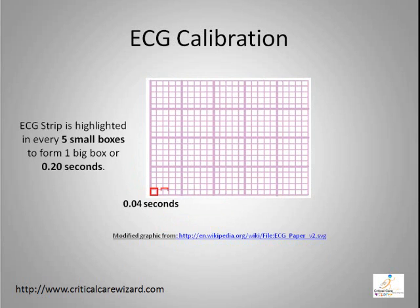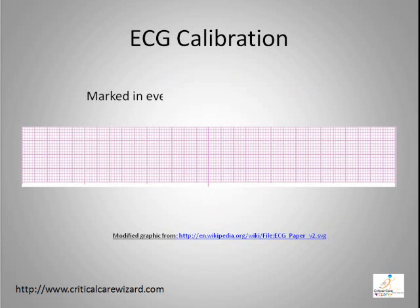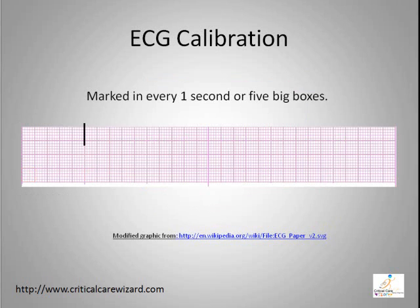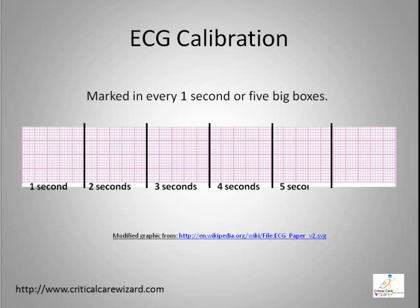In every five small boxes, the ECG strip is highlighted to form one big box, or 0.20 seconds. Another standard feature of an ECG strip is marked in every five big boxes to form one second. Most experts usually use a six-second EKG strip to interpret the rhythm and calculate the rate.